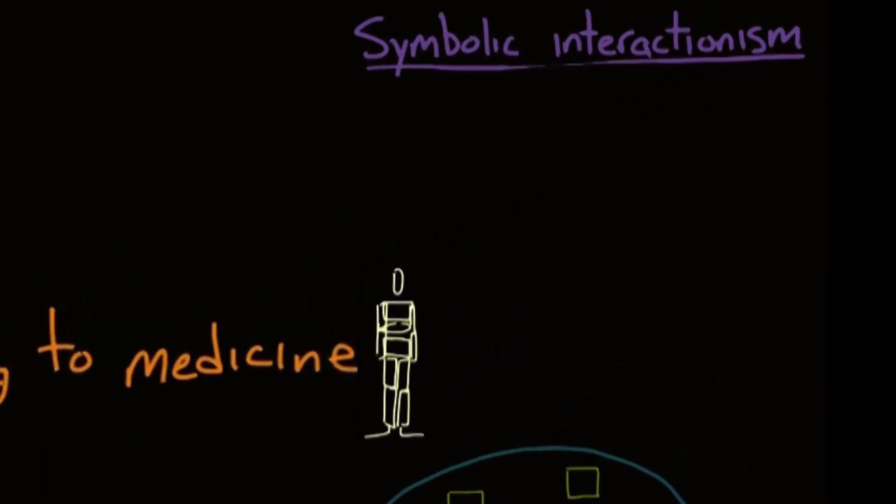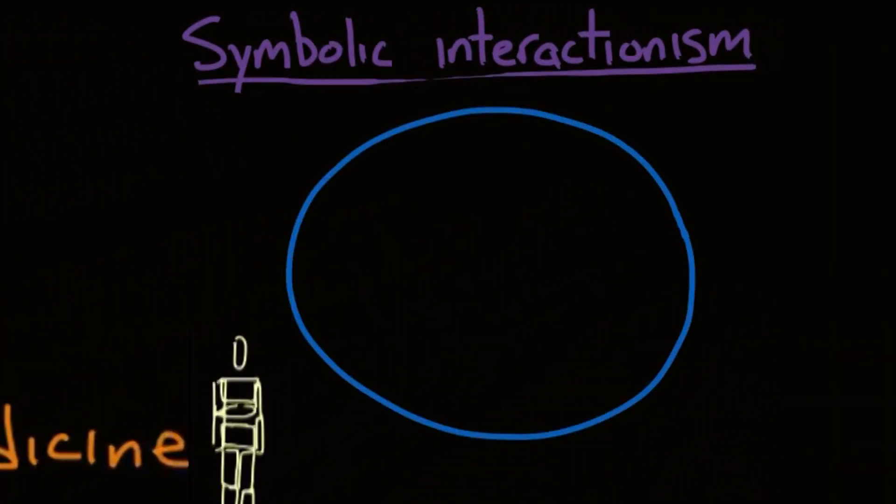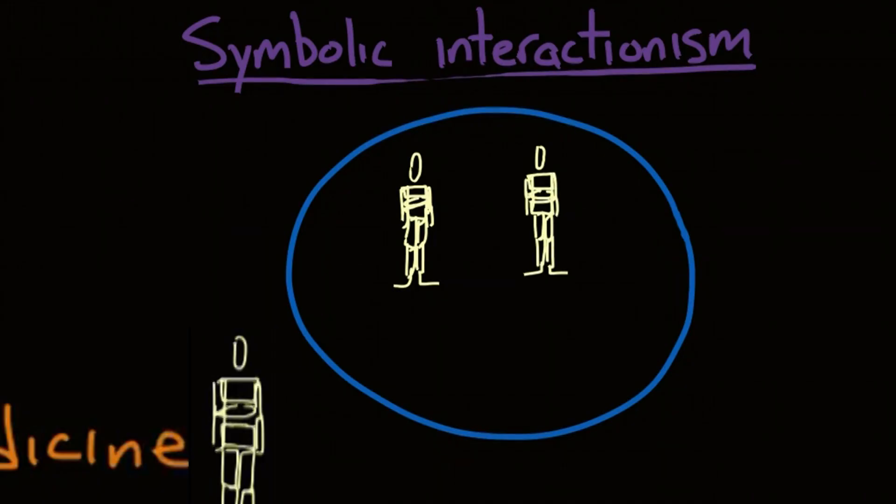Remember, symbolic interactionism states that individuals give the world meaning by interacting with it. One person could consider a bridge a way to cross over a body of water, while another person considers it a good shelter from the rain. There are many ways we can see how this applies to medicine. Let's take a look at two. For one, we have the doctor-patient relationship. The meaning given to simple objects like a lab coat or a stethoscope can affect the interaction. It is important for the doctor to realize the meaning the patient has given to the tools of medicine.